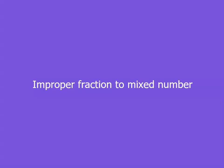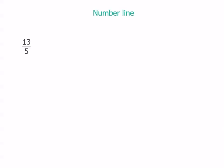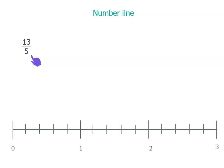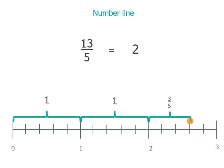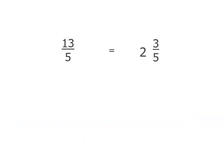Now if we go the other way, we start with an improper fraction — in this case 13 fifths. We've got fifths, so we know we're going to have a number line with sections into fifths. Our 13 tells us where on the number line we are: 5 fifths, 10 fifths because there's another 5, and another 3 fifths — that's where 13 fifths is. So the whole number is 2, and then we've got 3 fifths. So 13 fifths is the same as 2 and 3 fifths.